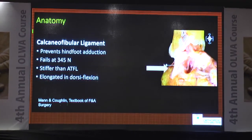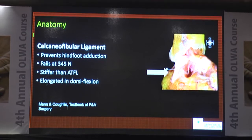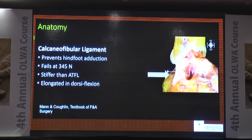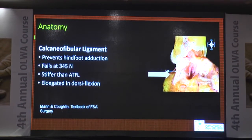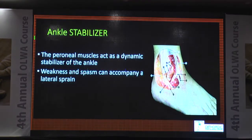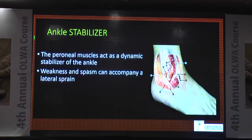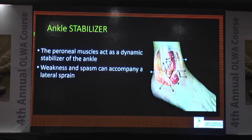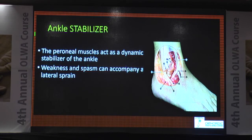These are the important ligaments and these are the ones which get sprained when your foot goes into inversion. Other than the static ligaments, there are also dynamic ankle stabilizers — those are the peroneal muscles. They are the dynamic stabilizers and they also help in the stability of the ankle.